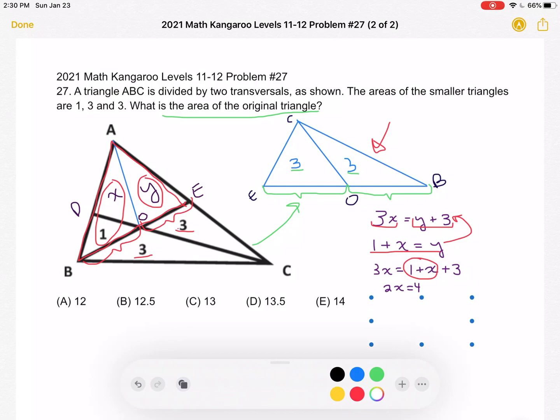Subtract X from each side. Add 1 plus 3 to get 4. So we get 2X is equal to 4. X is equal to 2. And we know that Y is 1 plus X. So Y is equal to 3.